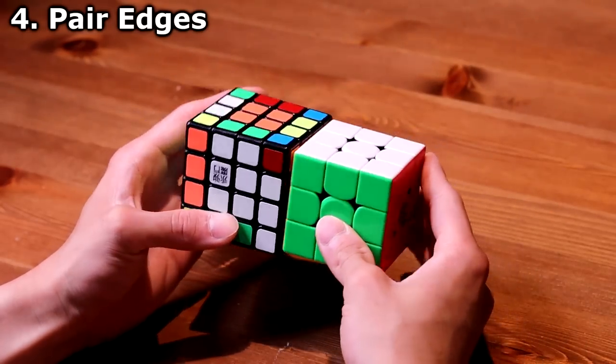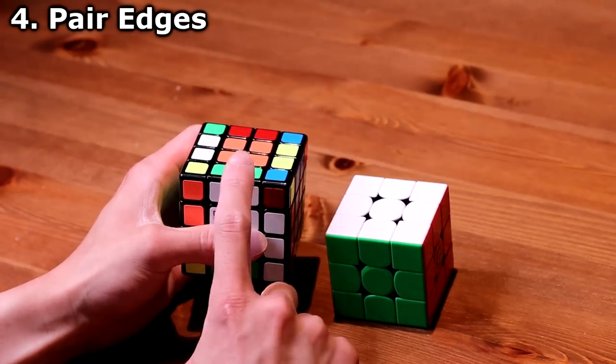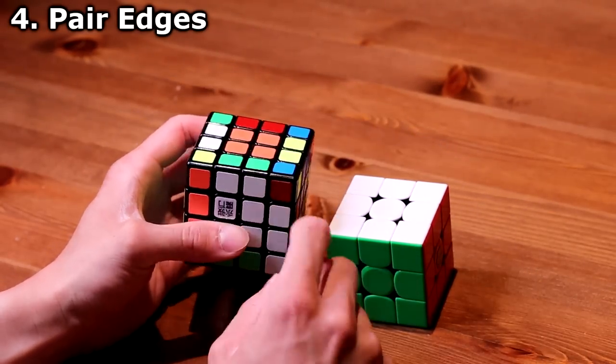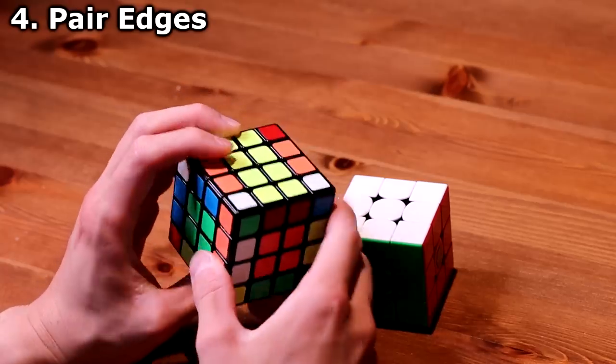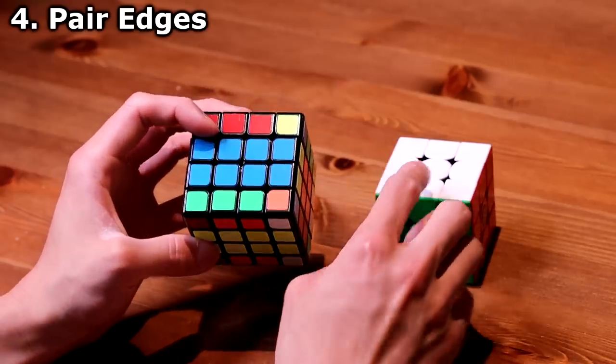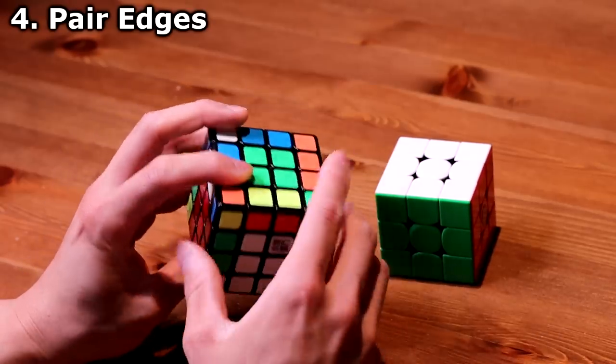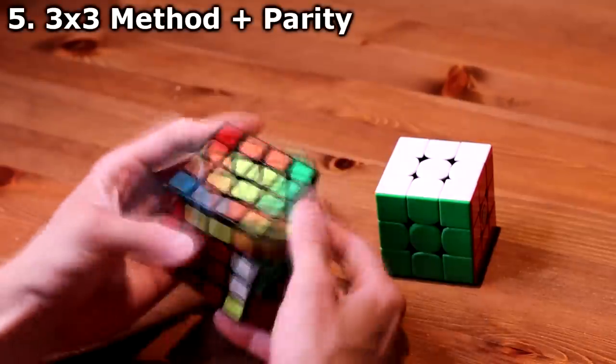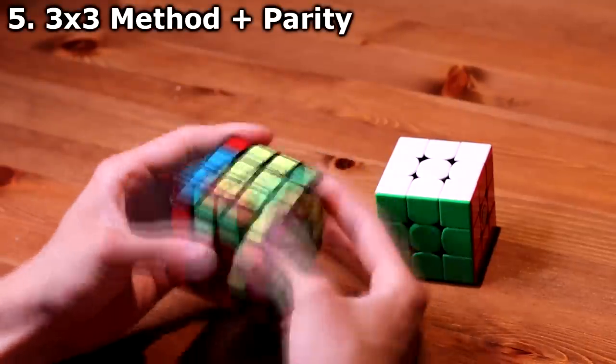Green and white piece, it will correspond to the green and white edge on a 3x3, and etc. Now, you will just solve it like a normal 3x3 Rubik's Cube.